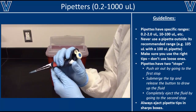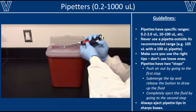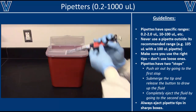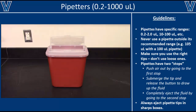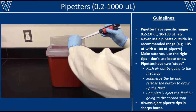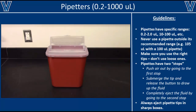When you are done using the tip, eject it into a sharps box using the ejector button, as shown here. If your pipette does not have a working ejector button, you can always take off the tip manually by hand.